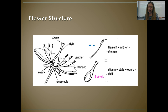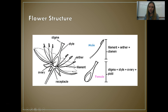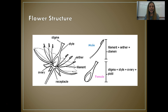Take a minute to draw and label the structure of a flower. Here's a typical-looking flower — they don't all look like this — but this structure here is the female portion of the flower, called the pistil. All of these little things here are the male portions of the flower, called the stamen.